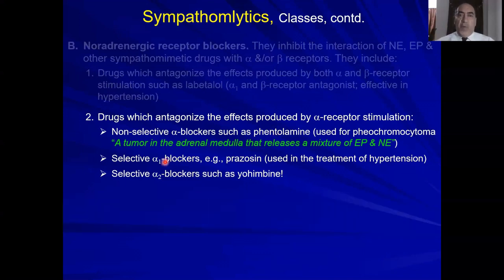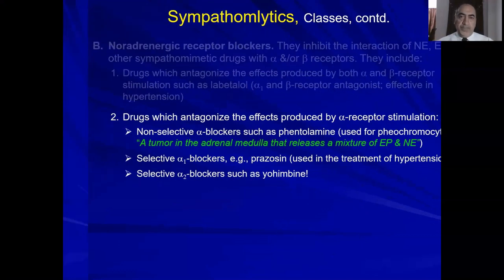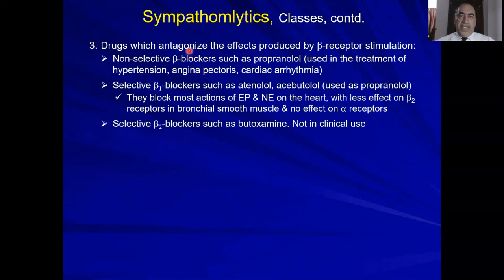Selective alpha-1 blockers include prazosin, doxazosin, and all of the '-osin' drugs, again used in treatment of hypertension. And selective alpha-2 blockers such as yohimbine. The last class is the beta blockers — non-selective beta blockers such as propranolol, used in treatment of hypertension.